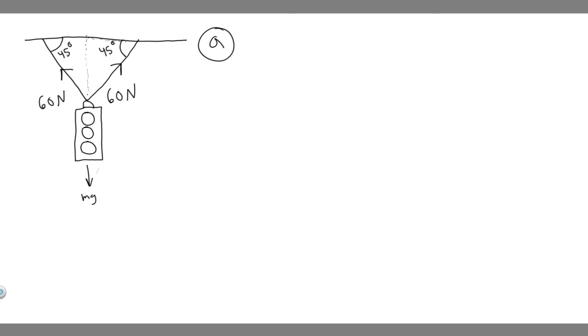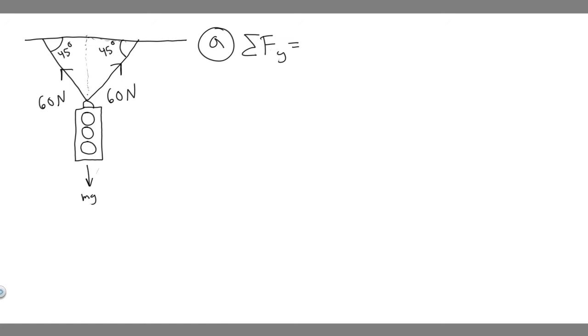So the Y components of both tension forces are going to be holding up MG. To find the resultant force, we need to find the Y component of each cable. We do that by taking the sum of the forces in the Y direction. Since the object is stationary, we know F = ma, and if it's not moving, acceleration is zero, meaning the sum of the forces equals zero.